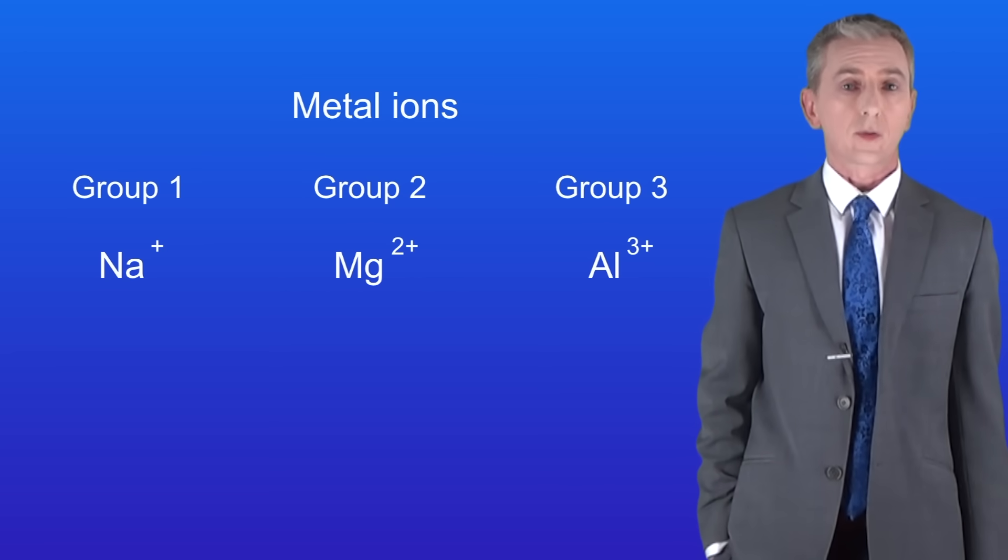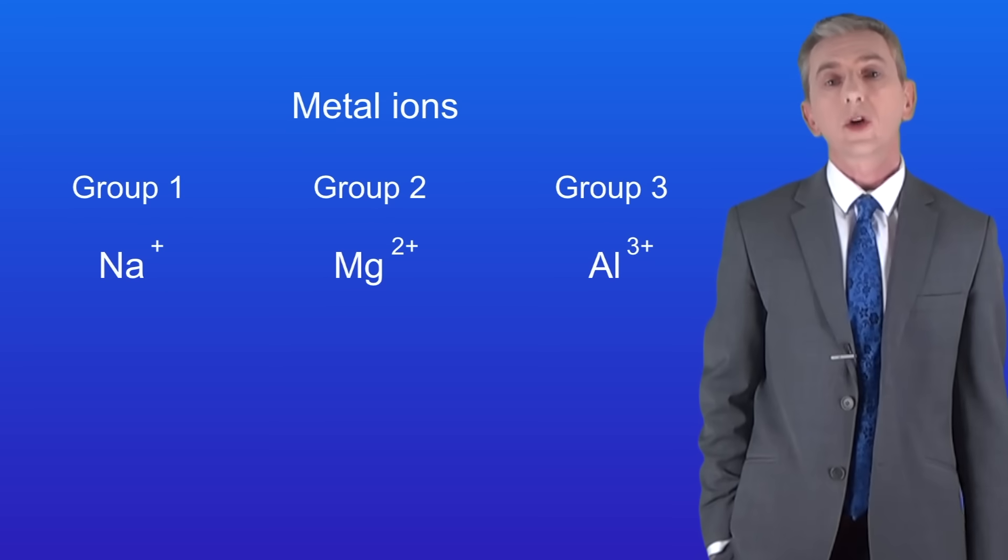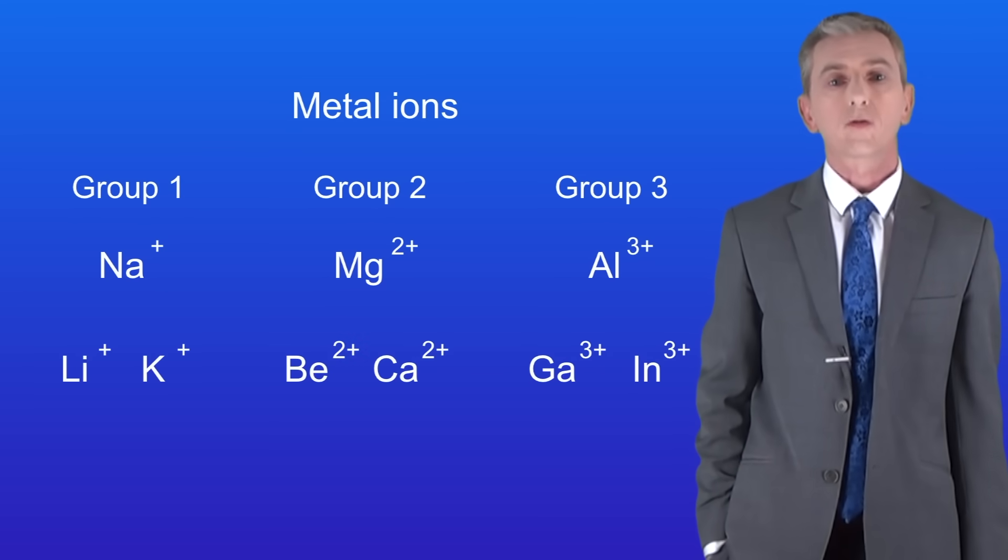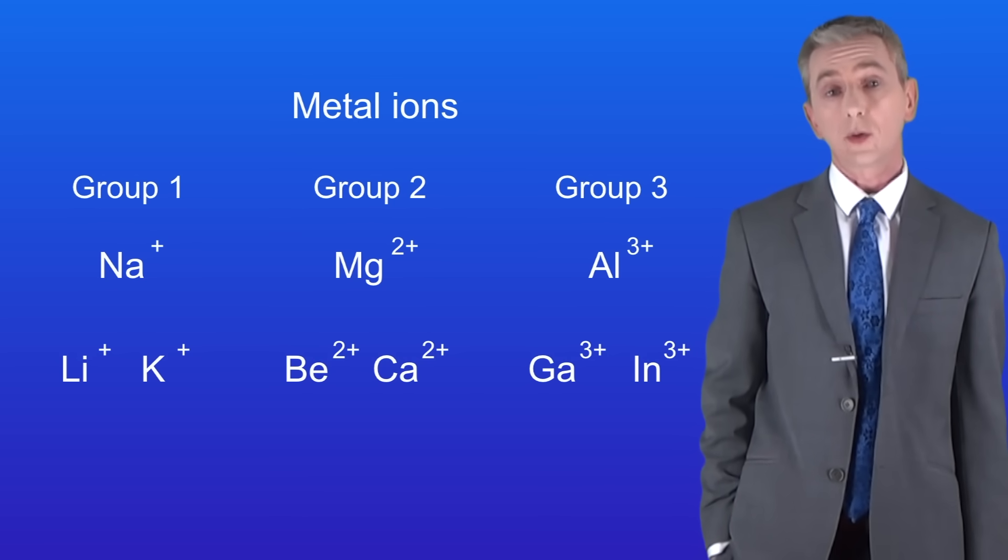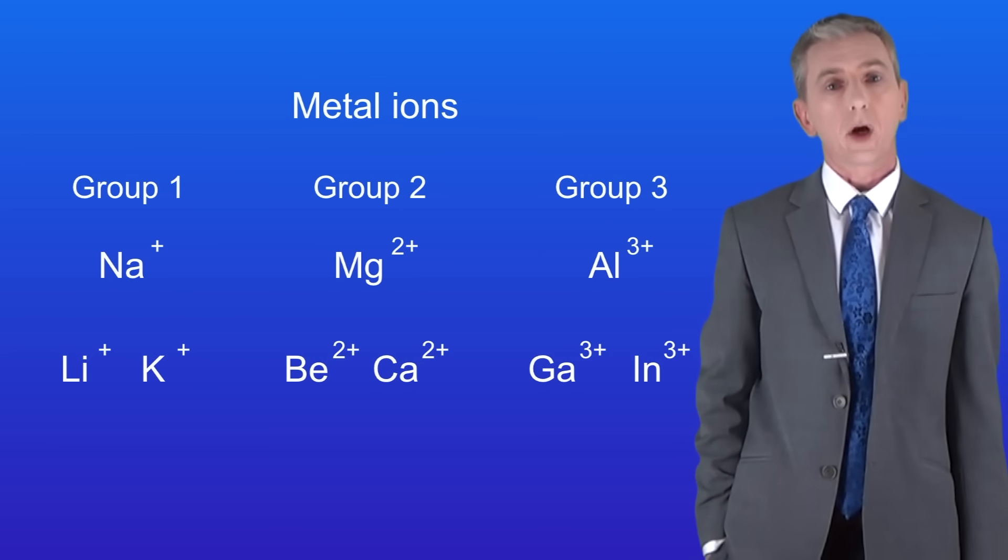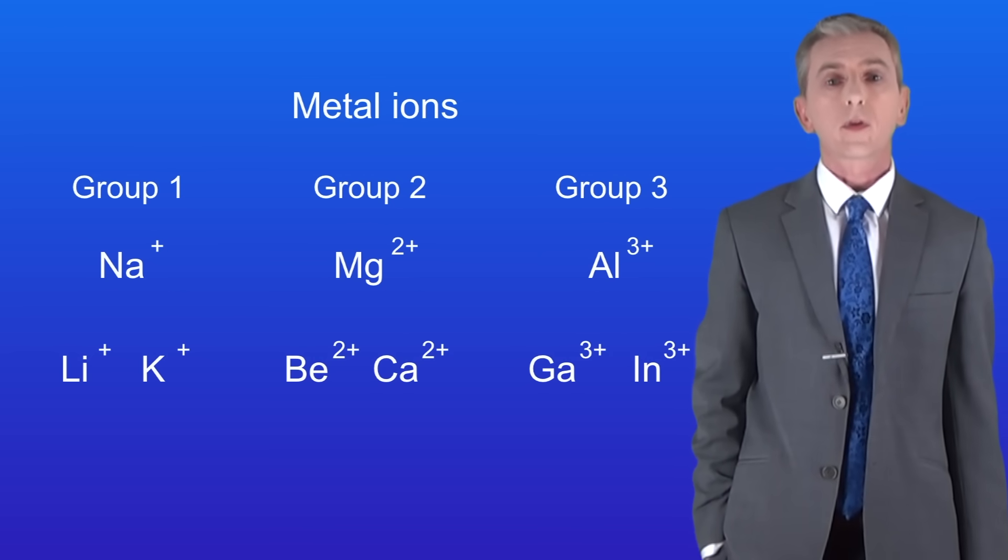We can also see this with other metals from these groups, which I'm showing you here. Both lithium and potassium are in group 1 and they form 1+ ions. Beryllium and calcium are both in group 2 and they form 2+ ions, and gallium and indium are in group 3 and these can form 3+ ions.